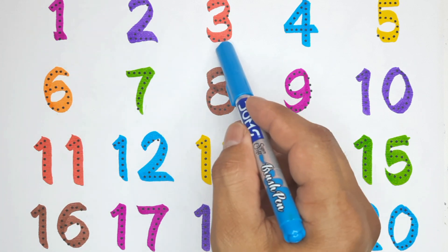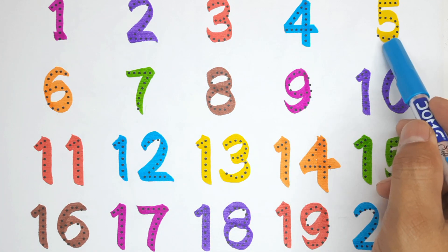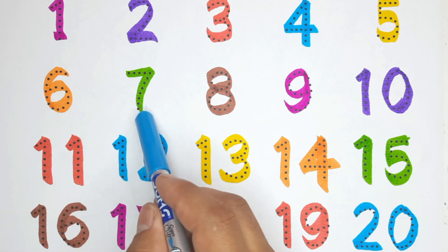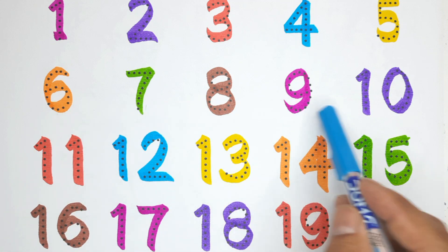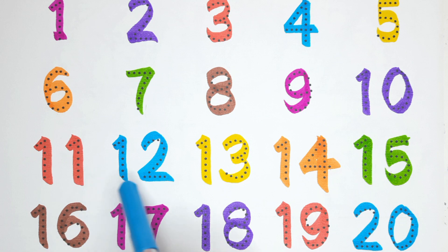Let's count together: 1, 2, 3, 4, 5, 6, 7, 8, 9, 10, 11, 12, 13, 14, 15, 16, 17, 18, 19, 20.